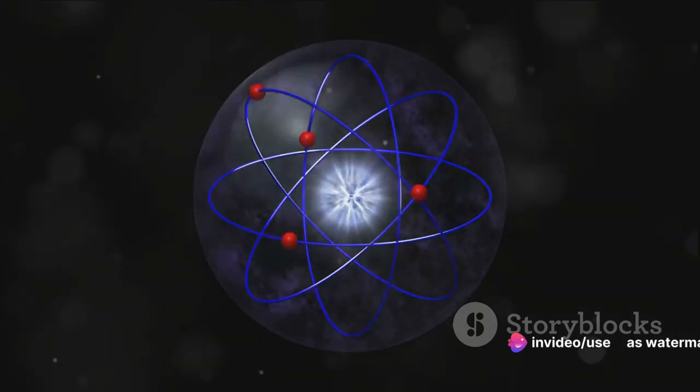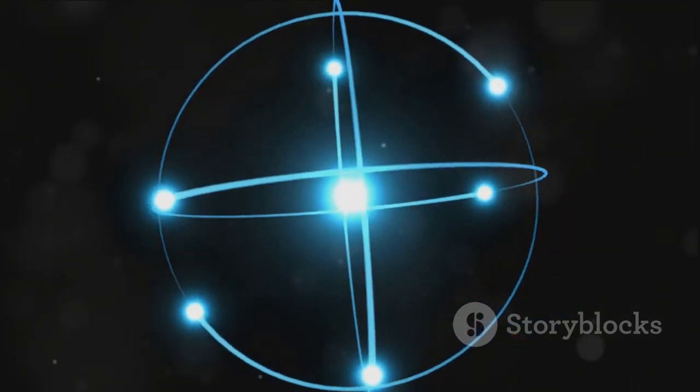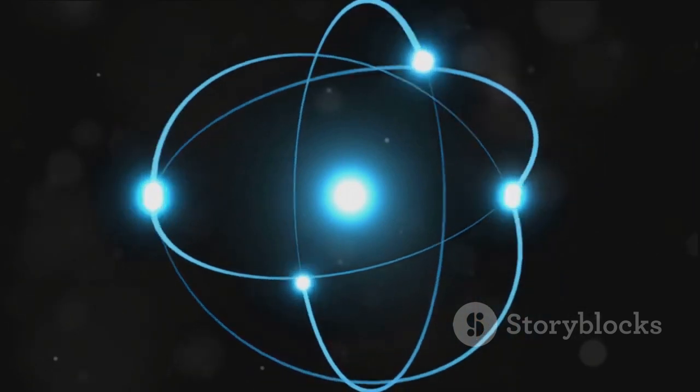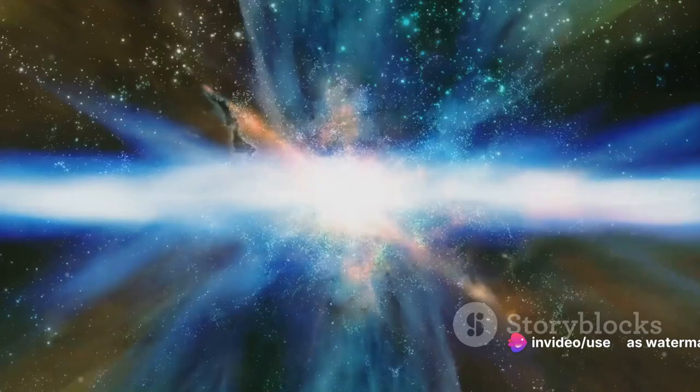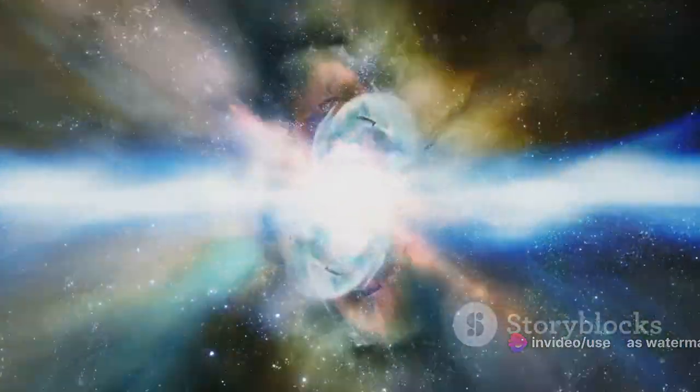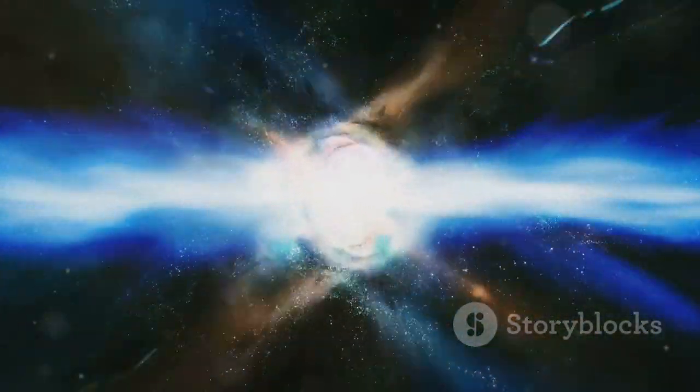The universe continued to expand and cool until we reach March, and something magical happened. Electrons began to combine with these nuclei to form neutral atoms. This event, known as recombination, allowed light to travel freely for the first time. This light is what we now observe as the cosmic microwave background radiation.